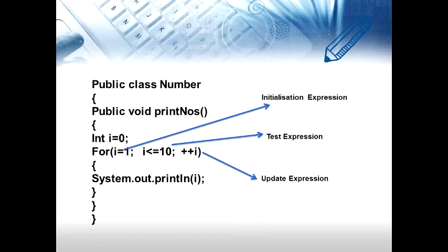Let us discuss in detail. First, the initialization expression i = 0 gives the first value of 0 to variable i. Then the test expression i <= 10 is evaluated, which results in true. Since the test expression is true, the body of the loop — system.out.println — is executed, printing the current value of i. After executing the loop body, the update expression ++i is executed, incrementing i. After the update expression, the test expression is evaluated again. If true, the sequence repeats from step 3; otherwise the loop is terminated.